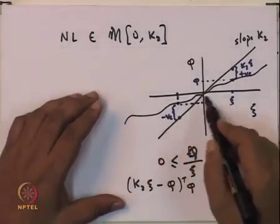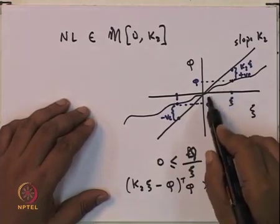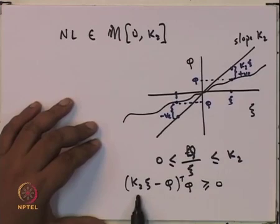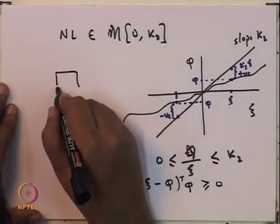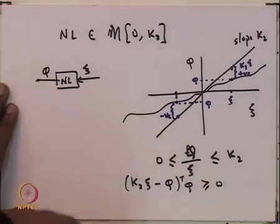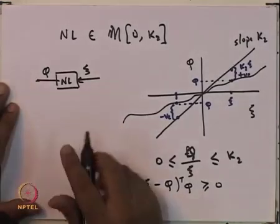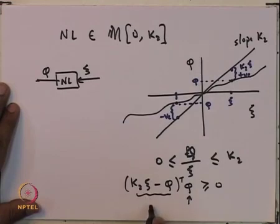What I have done is looked at this nonlinearity and a certain quadratic inequality which gets satisfied by any nonlinearity lying in that sector. Now I am going to use this quadratic relation to modify my original nonlinearity such that it becomes a nonlinearity in the 0-infinity sector. I do something similar to last time: here is the nonlinearity with input psi and output phi. Last time we kept the input the same and modified the output; this time I am going to keep the output the same but modify the input. The new input psi tilde is going to equal K2 psi minus phi.